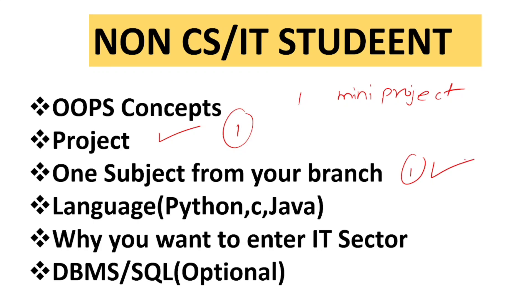One subject from your branch is very essential. For electrical and electronics, they can ask questions from circuits. For mechanical, prepare one subject from your own branch. Next, you must know at least one programming language — no need to know two or three, but at least one at a medium or good level. It can be Python, C, Java, or any other.